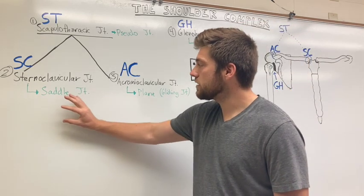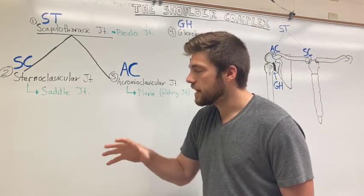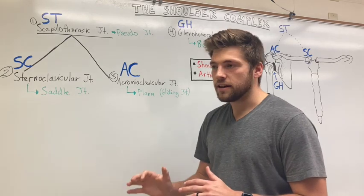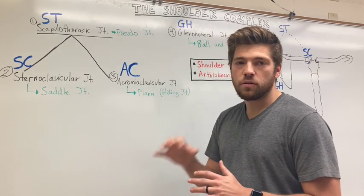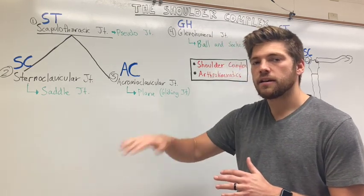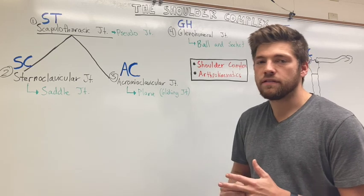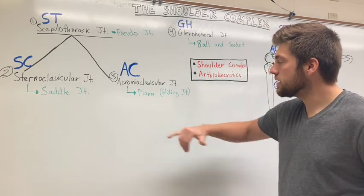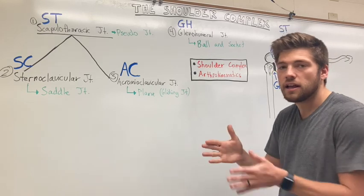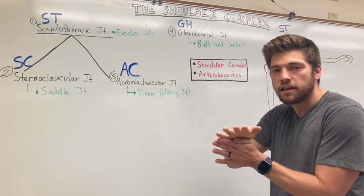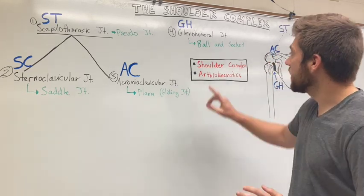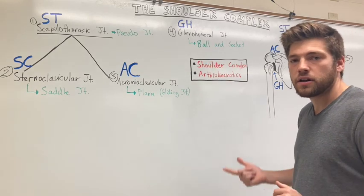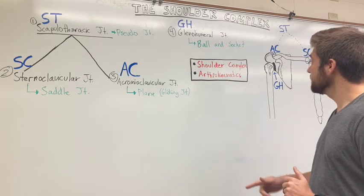The sternoclavicular joint is a saddle joint, because in one plane it's convex arthrokinematics and in the other plane it's concave arthrokinematics. The AC joint is a plane or gliding joint, so it kind of slides on each other. And the glenohumeral joint is a ball and socket joint. Now we're going to go over the arthrokinematics of each one.